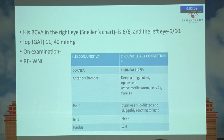His best corrected visual acuity in the right eye was 6/6 and left eye 6/60. His IOP on GAT was 11 and 40. On slit lamp examination, the right eye was within normal limits, and in the left eye, the conjunctiva showed circumciliary congestion.